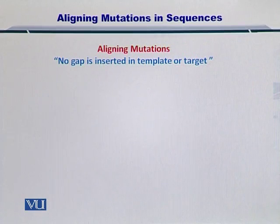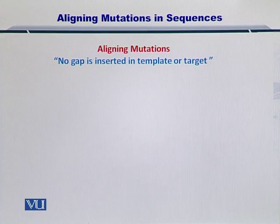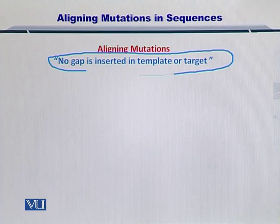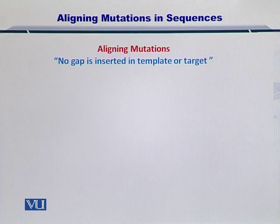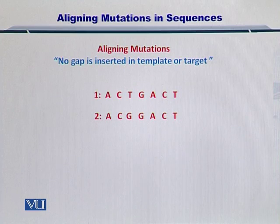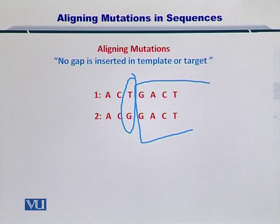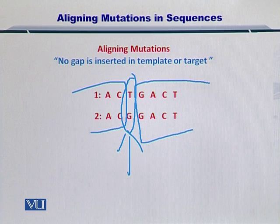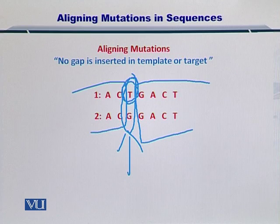So while aligning mutations, what we need to do — unlike the insertions and deletions — is we do not insert a gap in the template or the target. What we simply do is take two sequences and observe that these two sequences differ at a certain position, while the rest is conserved in both cases. This difference is sourced from a substitution wherein T has been substituted by G.